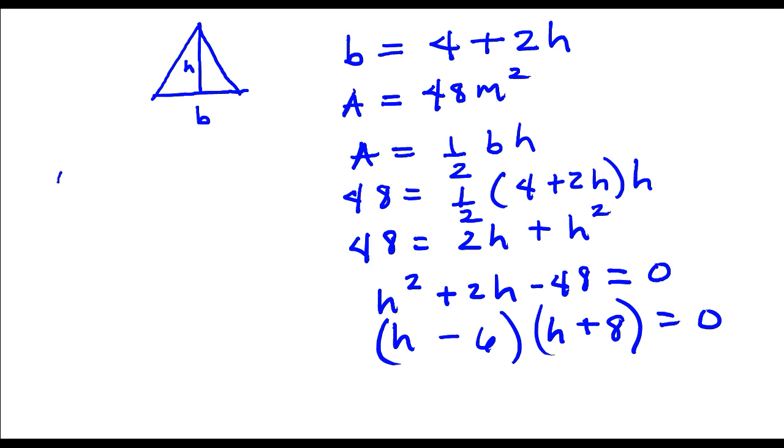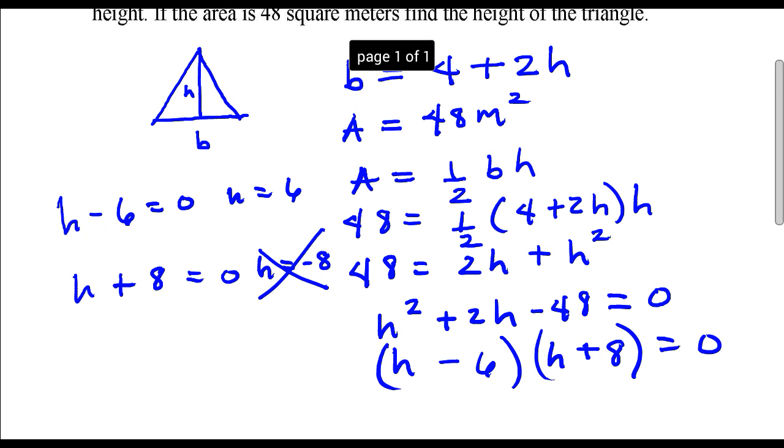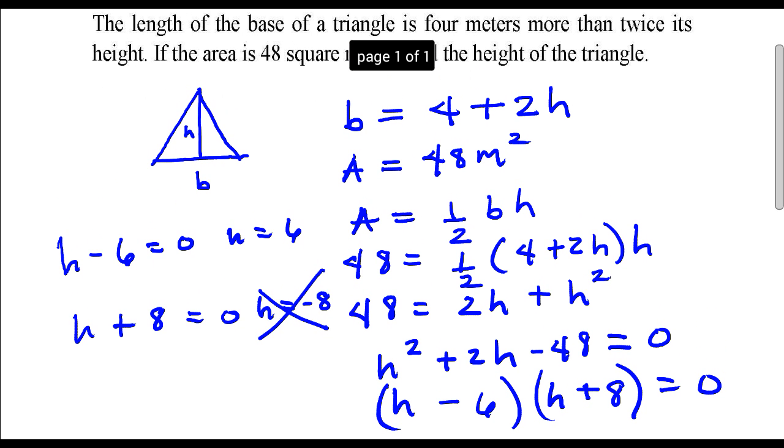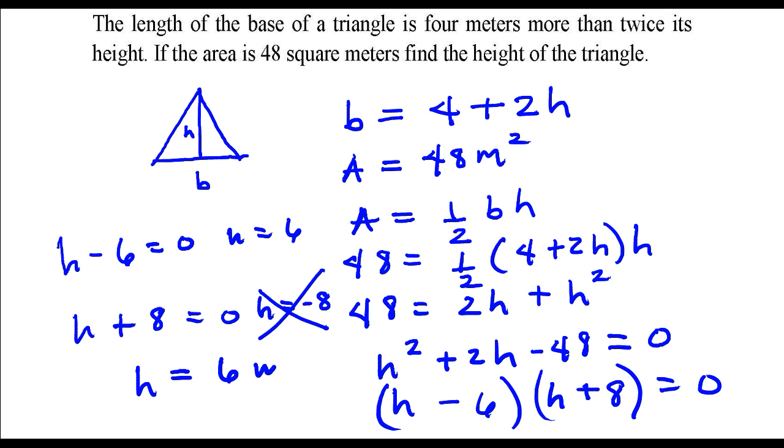Next, I'm going to set each of those factors equal to 0 and solve each one. Here in this equation I have H is 6, here I have H is negative 8. I'm going to throw this one out because it wouldn't make any sense to have the height a negative number. So the height of this particular triangle is 6 meters.